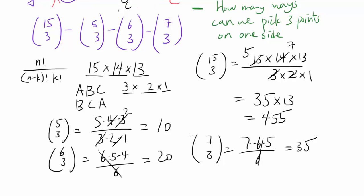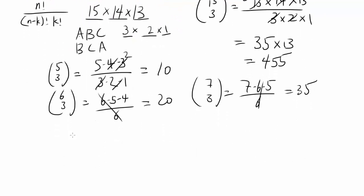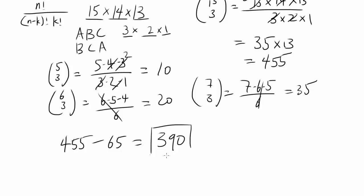So our answer is 455 minus 10 minus 20 minus 35, which is 455 minus 65, giving us 390. That is our final answer.